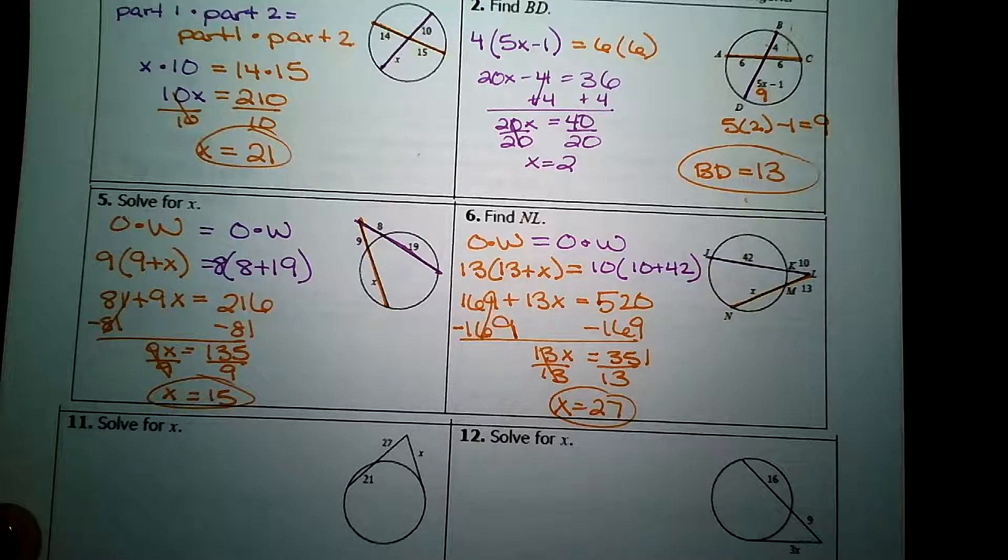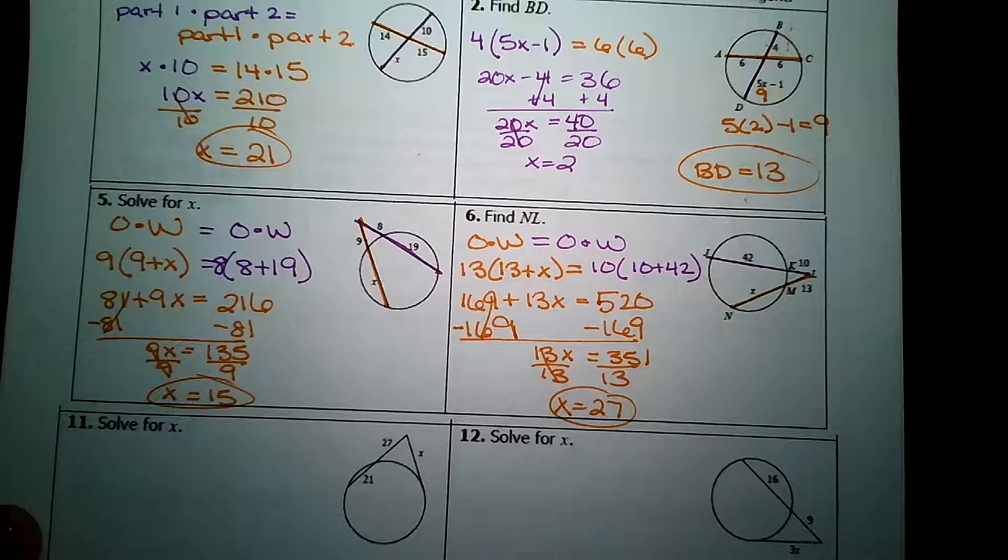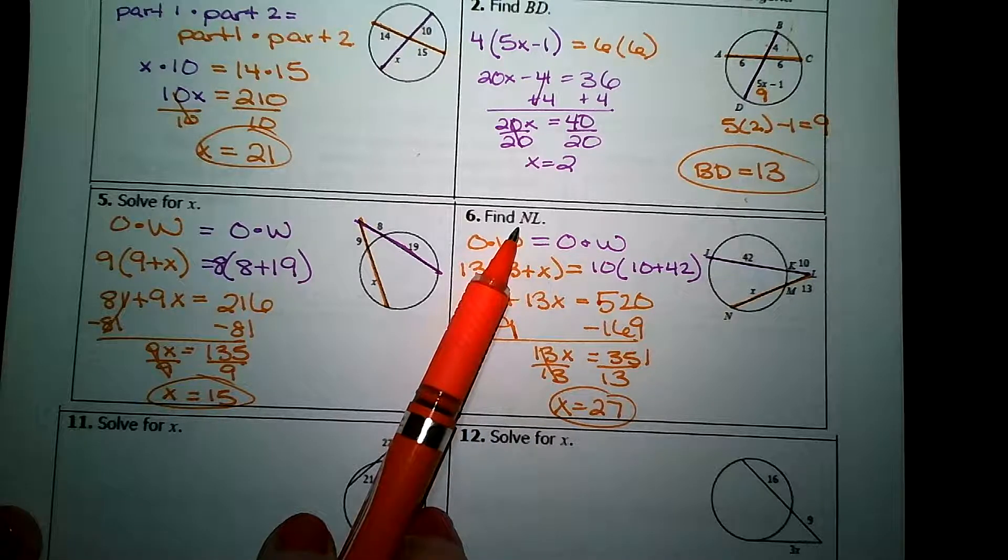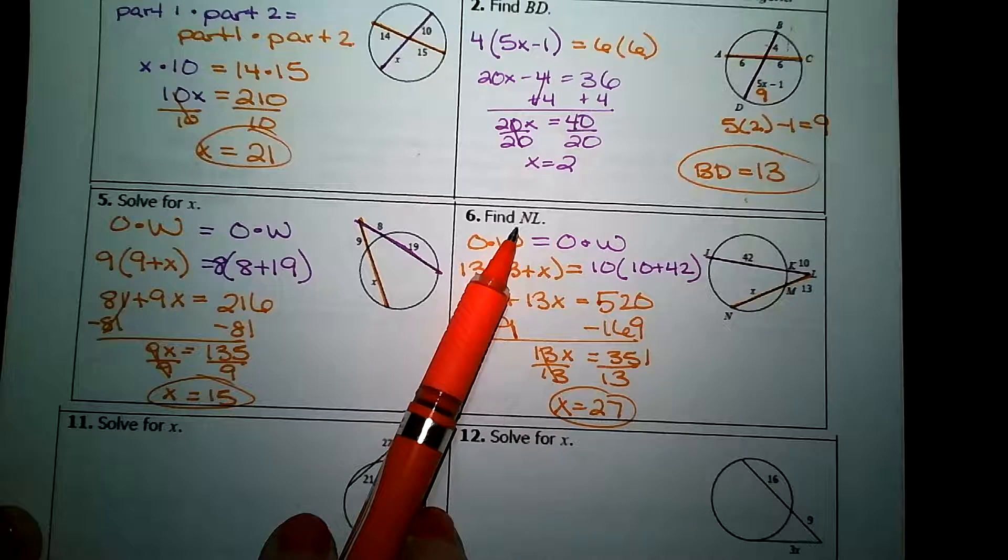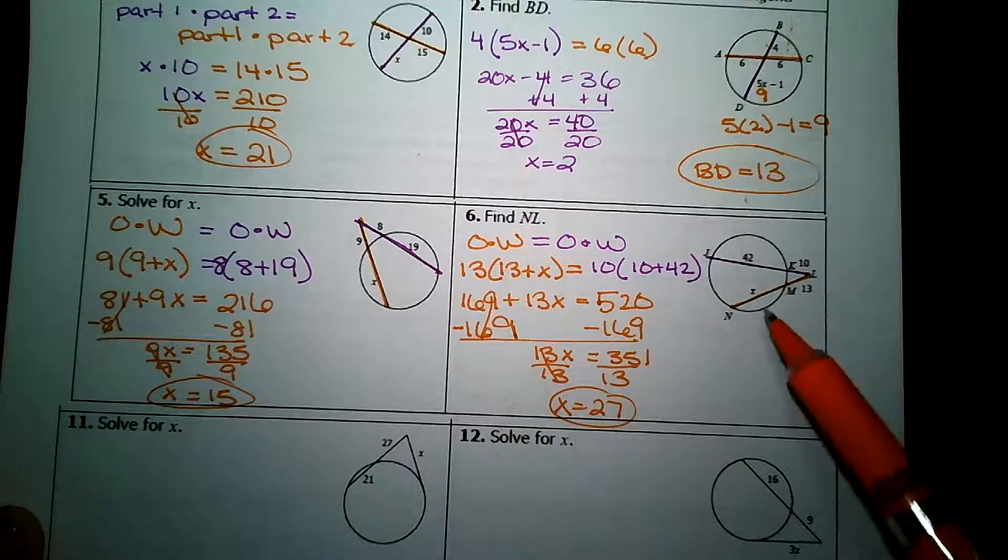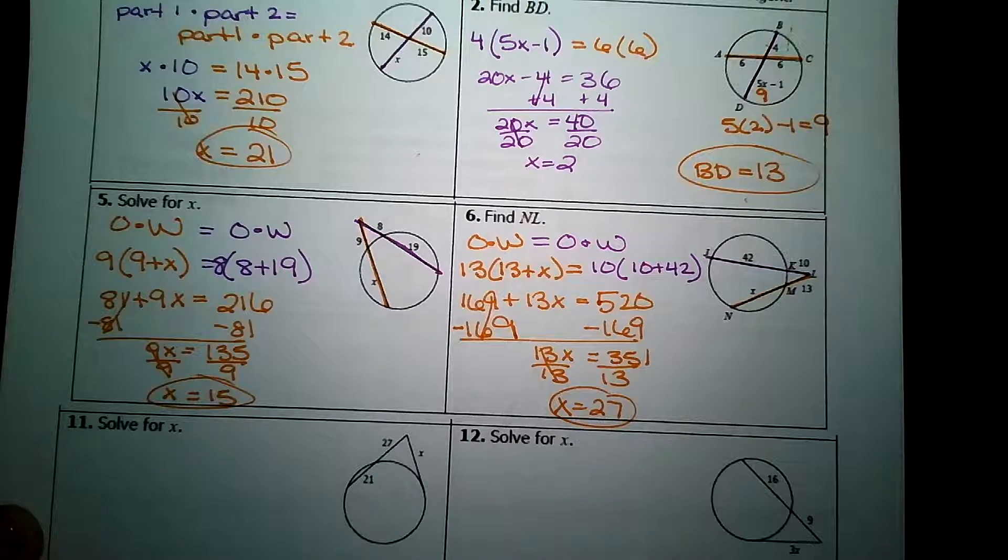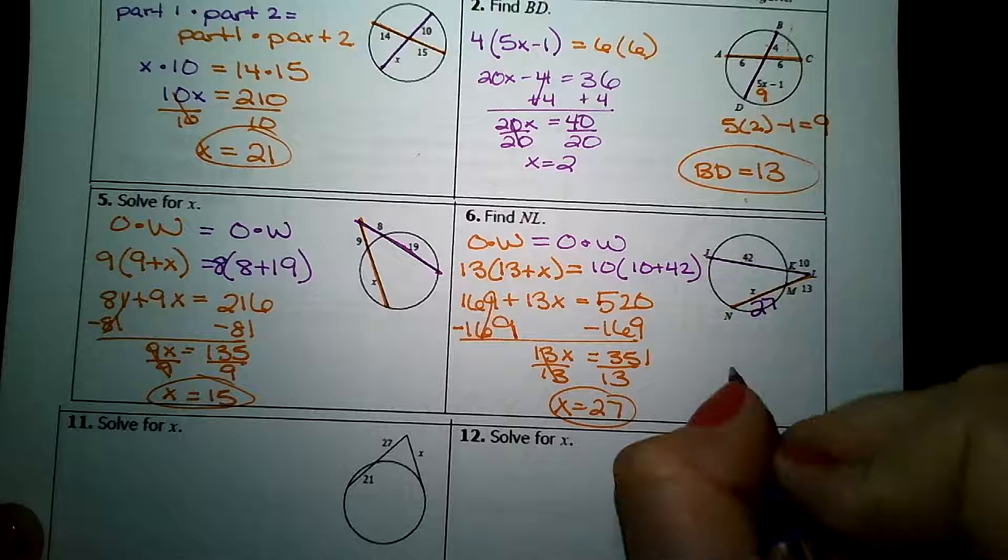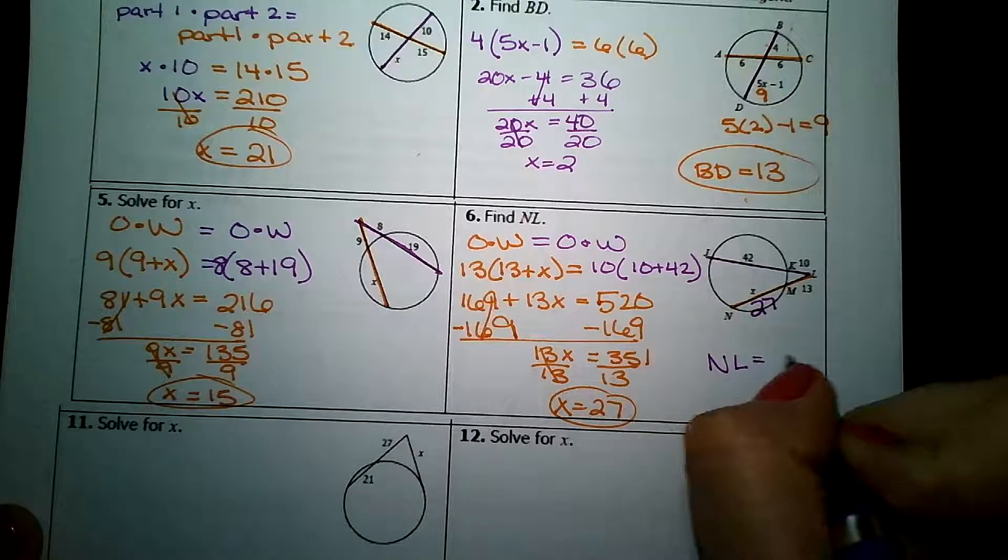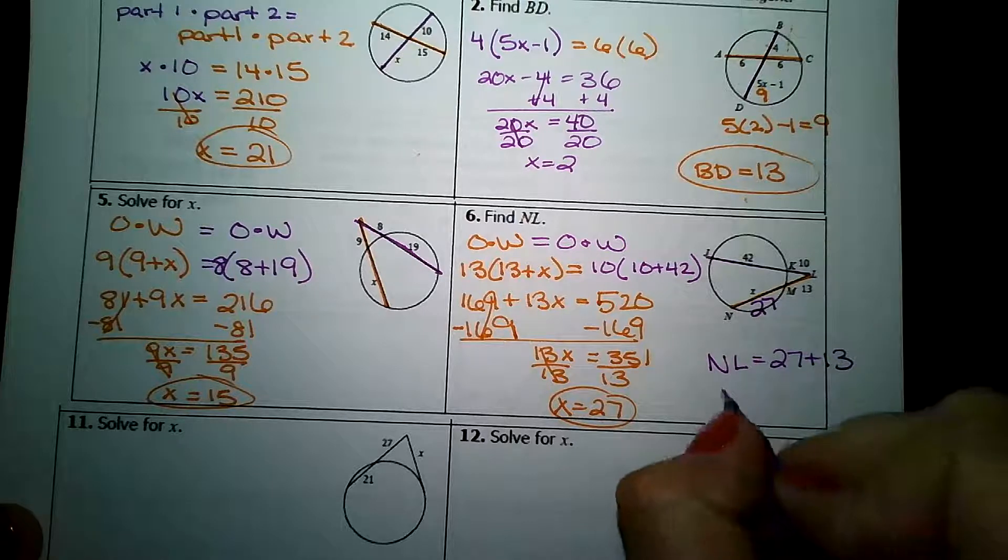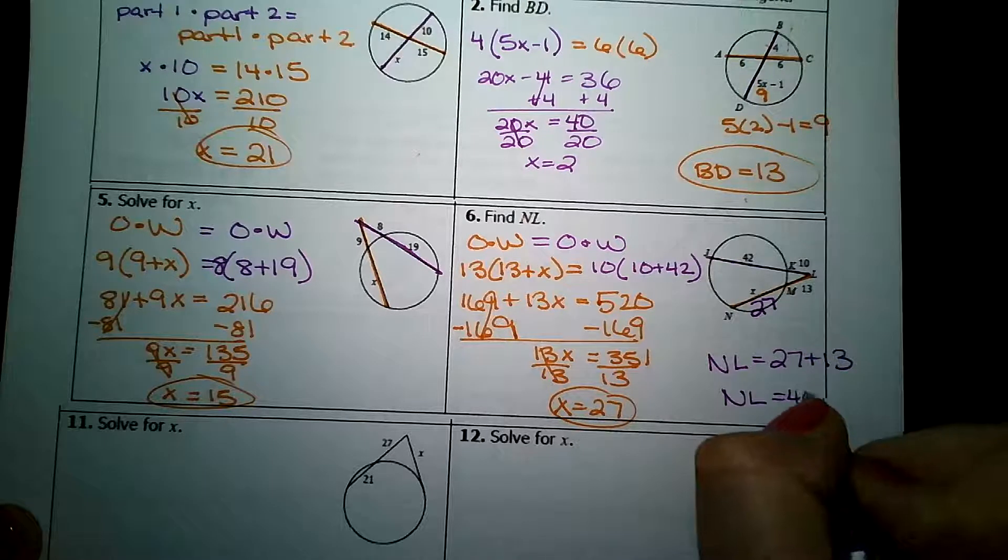When I finished the algebra of this problem, I got that x is equal to 27. However, I'm not finished. The problem states find NL. NL is the entire length of my orange cord. So if I got 27 for NM and 13 for ML, then NL is asking me to add those together. 27 plus 13 is 40.